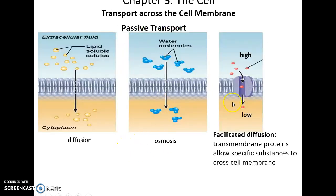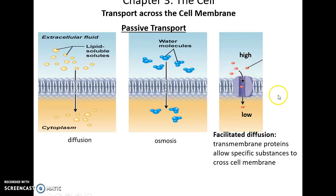Another form of passive transport is facilitated diffusion. With facilitated diffusion, there is a transmembrane protein acting as a channel that lets a specific substance move from high concentration to low concentration.